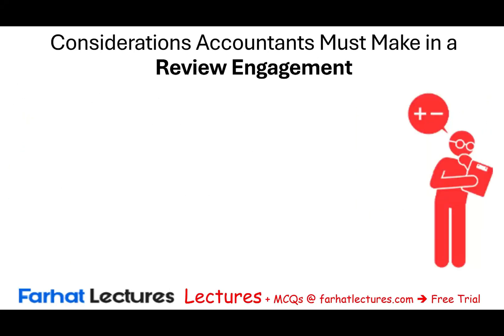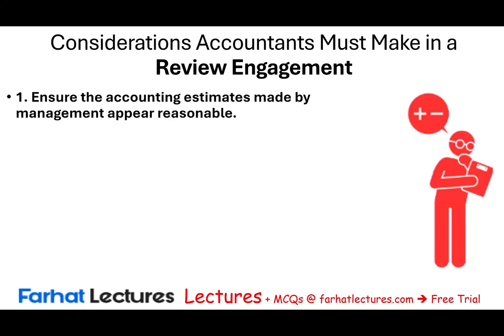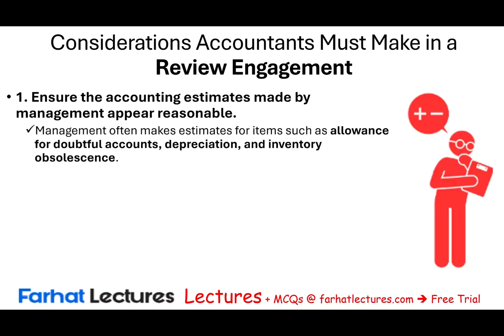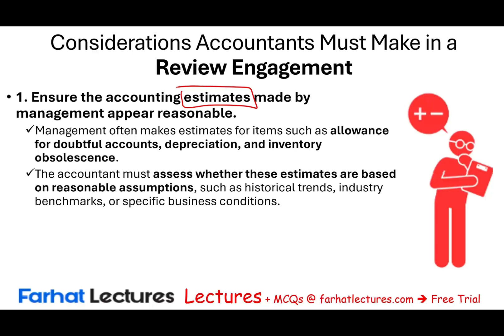What considerations must the accountant make in a review engagement toward the end? First, we want to make sure that the accounting estimates they made are reasonable. Throughout the review engagement we would look at estimated numbers like doubtful accounts, allowance for doubtful accounts, depreciation, and inventory obsolescence. We want to make sure all these estimates are made in good faith and appear reasonable — did they use historical trends, industry benchmarks, specific business conditions, or are they using methods that favor their numbers?